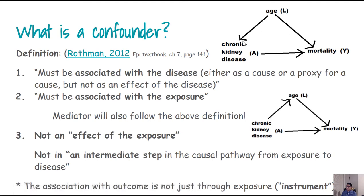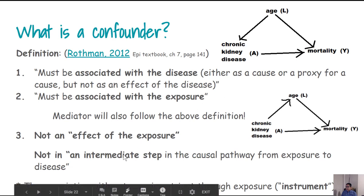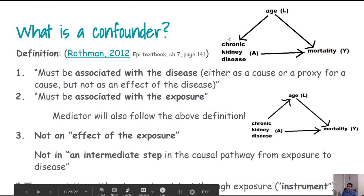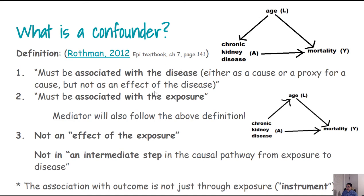There is an additional condition worth noting. A variable may be associated with Y but only via the exposure variable — such variables are known as instruments. For the purposes of this definition, instruments do not constitute a confounder. So a true confounder must meet all three conditions and must not be an instrument.